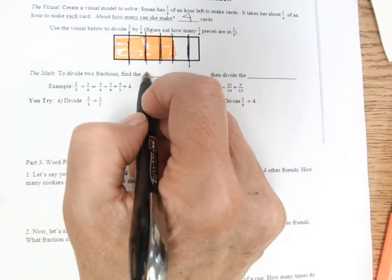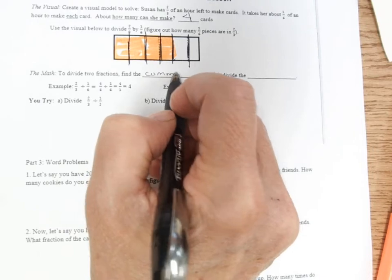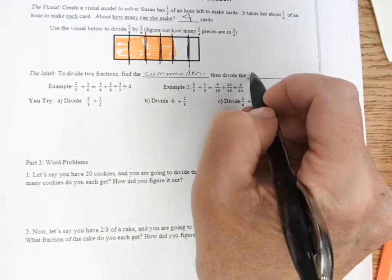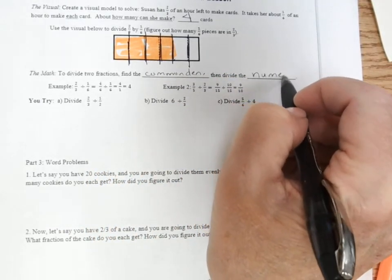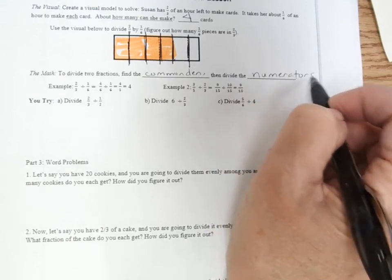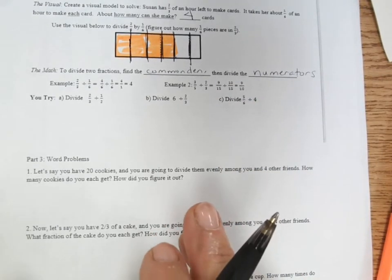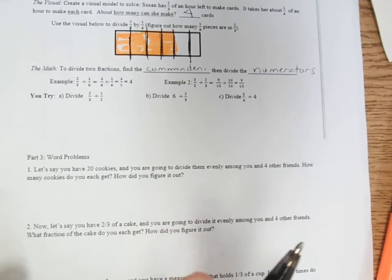you find the common denominator and then divide the numerators. So adding, subtracting, and dividing, you find the common denominator.